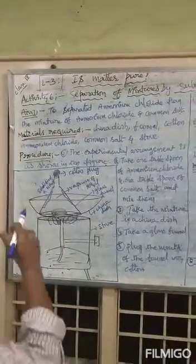Procedure: The experimental arrangement is as shown in the figure. Take 1 tablespoon of Ammonium Chloride and 1 tablespoon of Common Salt and mix them thoroughly. Take the mixture in a china dish. Take a glass funnel and plug the mouth of the funnel with cotton. Invert the funnel over the dish as shown in the figure. Heat the dish on the stove and observe the walls of the funnel.